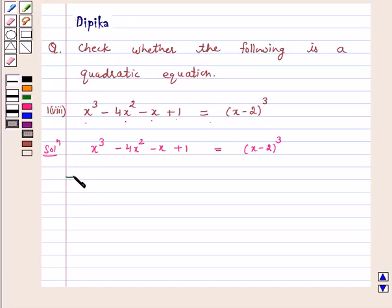We can write it as x cubed minus 4x squared minus x plus 1 equals... Now apply the formula of a minus b whole cube. That is a cubed minus 3a squared b, which gives minus 6x squared, plus 3ab squared, which gives plus 12x, minus b cubed, which is minus 8.